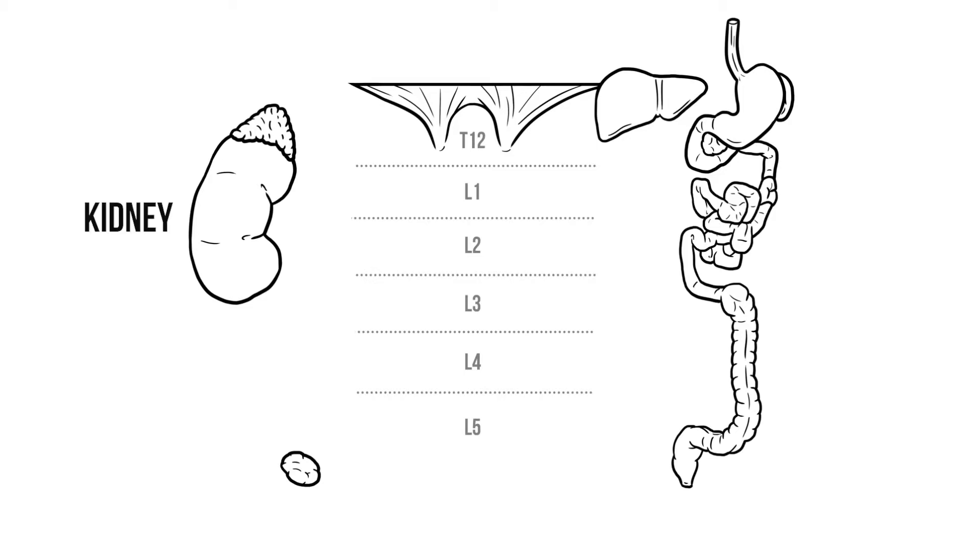So on the left we have a kidney with a suprarenal gland up top. Down here we have a gonad, which is just the general term for the organs that produce reproductive cells. So the ovaries in females or the testes in males.